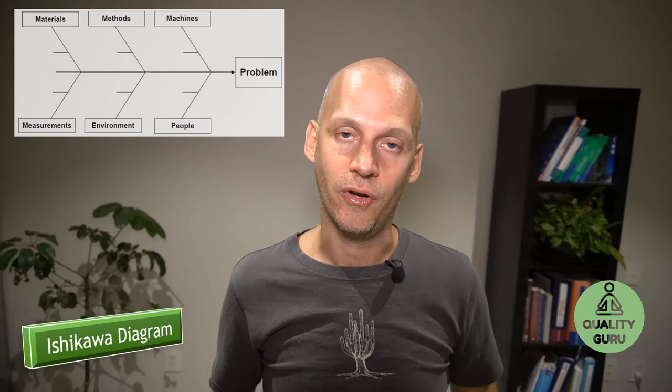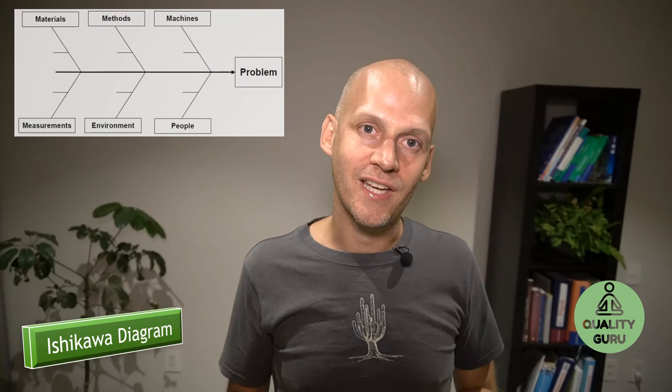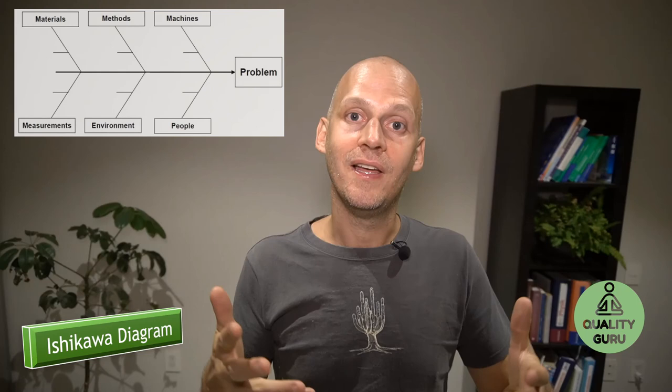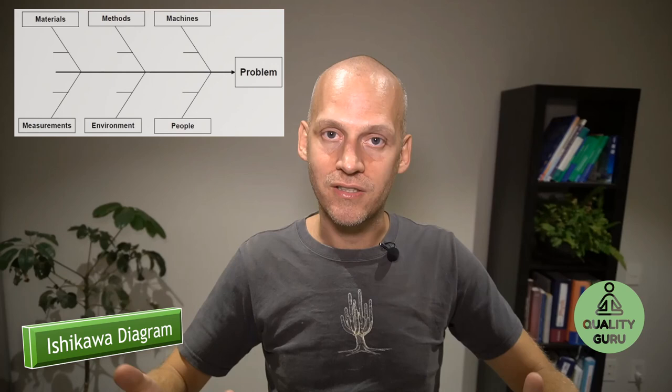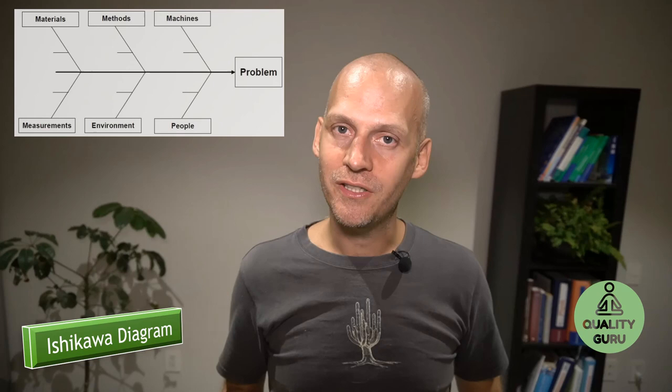The Ishikawa diagrams can have five bones, six bones, seven bones. This example here has six bones. The main purpose of this exercise is you can do it with as many bones as you want. But the idea is to generate ideas and let the people come up with ideas so that you later have more meat on the bones to find the real root cause for your problem. What do you think about Ishikawa analysis? Do you have any experience to share? Do you use five, six or seven or ten bones? Let me know in the comments and I see you in the next video.